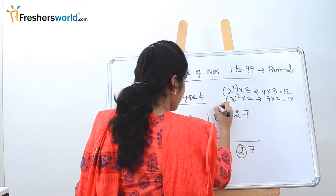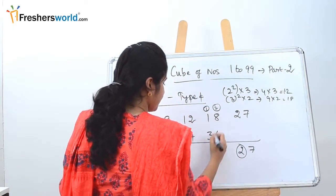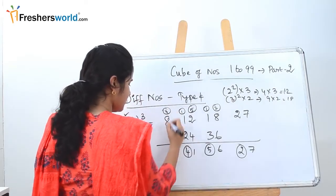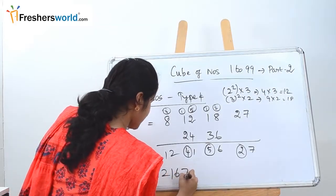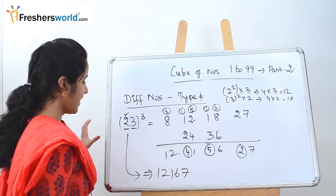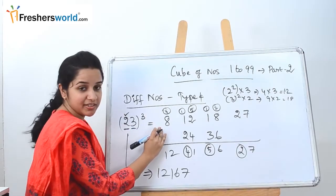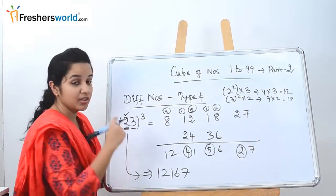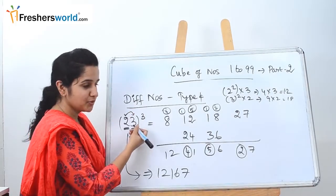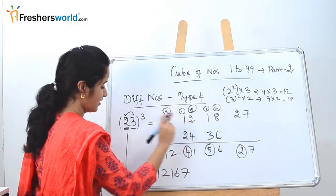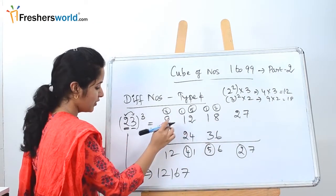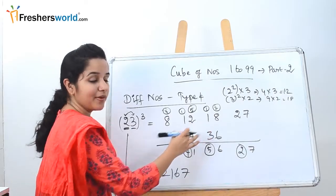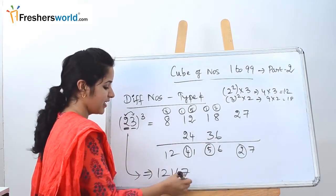Add from right to left with carry-overs: 27 — carry 2; 10 + 6; carry 5 → 7, 11; carry 4 → 12. The answer is 12, 1, 6, 7 — so 23 cubed is 12167. To summarize: cube of first digit goes left, cube of second goes right. Middle positions use (first² × second) and (second² × first), each multiplied by 2. Then add with carry-overs to find the answer.